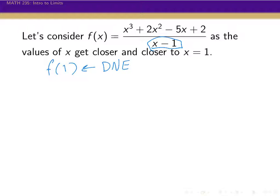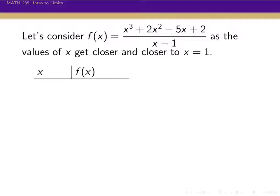So it makes it interesting to think about what happens around 1. If we don't plug in exactly 1, but something a little bit off from 1, what's happening with this function? The simplest thing to do is let's just start creating a table of values. If I want to be close to 1 — say 0.9, that's pretty close — and if we plug that in, we get that the value of the rational function there is 1.51.